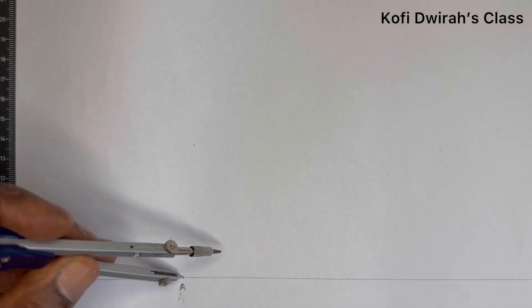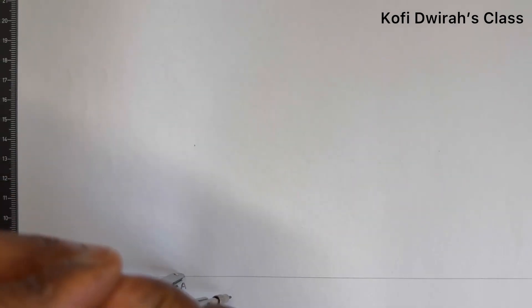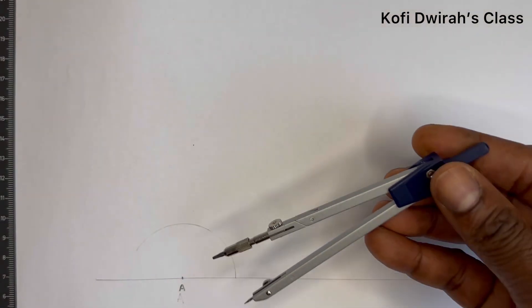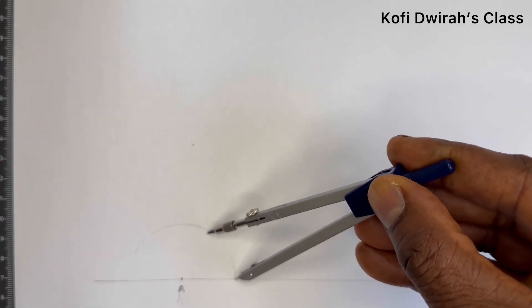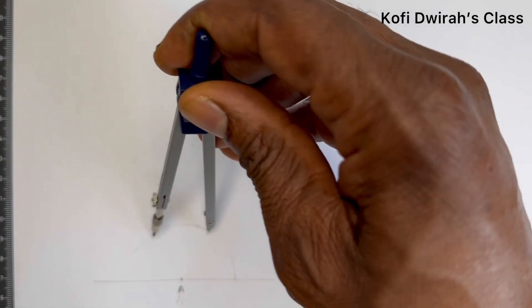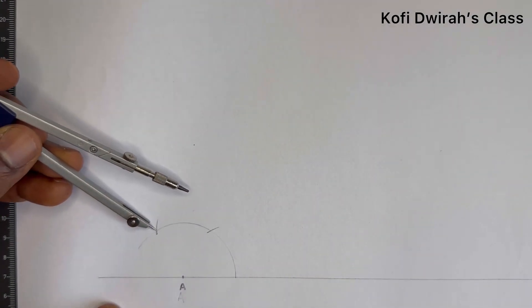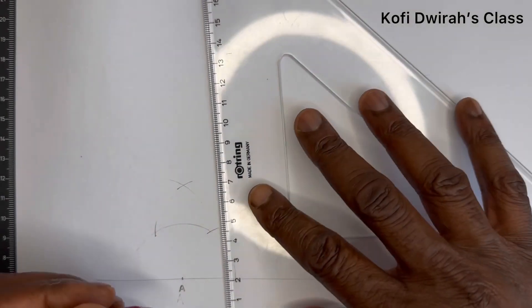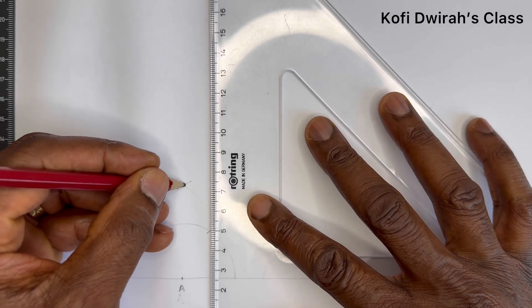At point A, open your compass to any radius, then draw an arc. At this point, draw another arc, and at the next point draw another arc. Then bisect at this point and draw a line to complete the 90 degree construction.